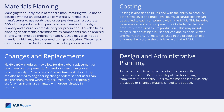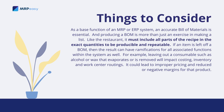As many products within a manufacturer are similar and derivative, most bill of materials functionality allows for cloning or copy-from functionality. This saves time and labor as only the added or changed materials need to be added. As a base function of an MRP or ERP system, an accurate bill of materials is essential, and producing a bill of materials is more than just an exercise in making a list.